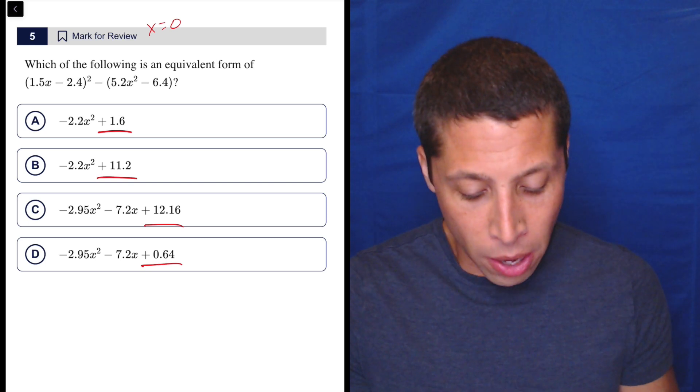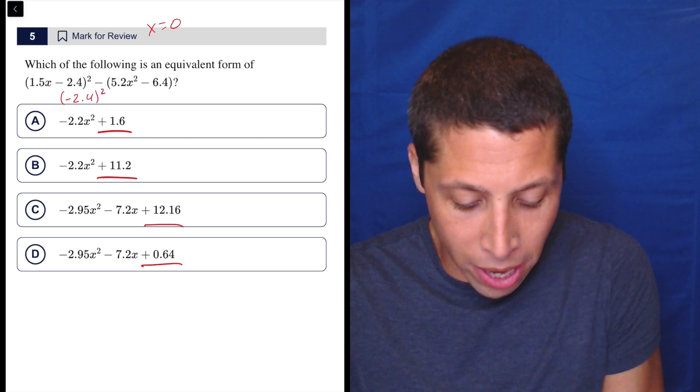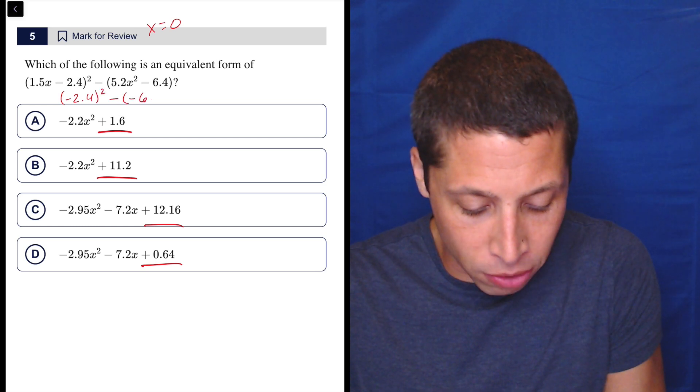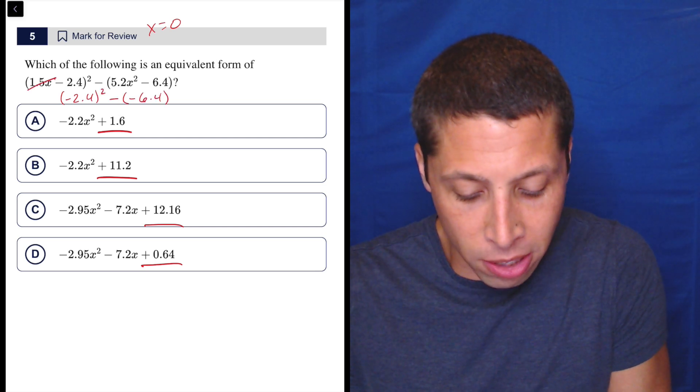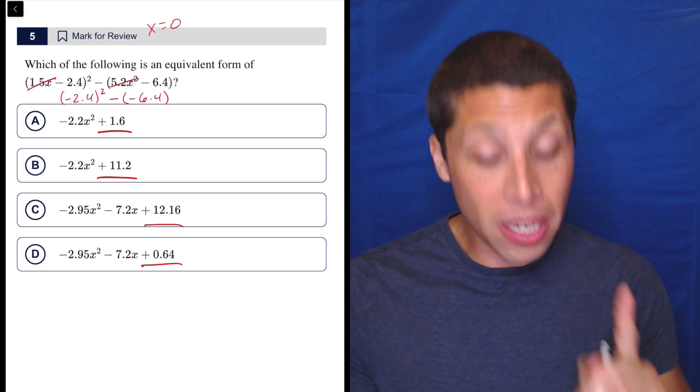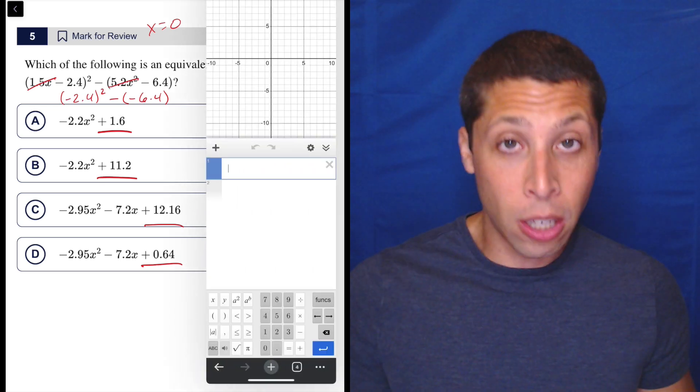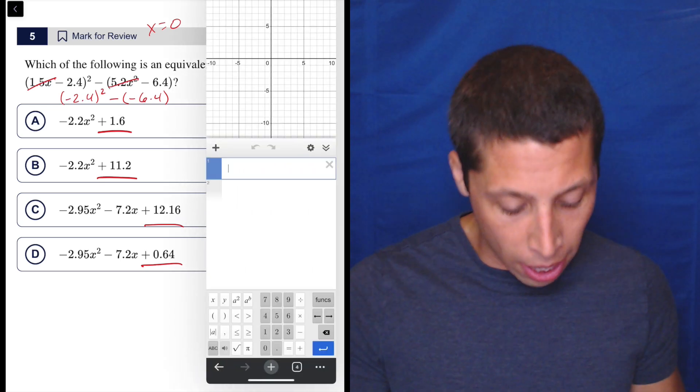So like we've been doing, let's make x equal to zero. So this equation really just becomes negative 2.4 squared minus negative 6.4, right? Because if we put a zero in, this goes away and this goes away. So we can't lose those negatives, and we got to be careful with the parentheses, but otherwise this should work itself out. So I would normally go to this calculator, but to show you, I'm going to use Desmos here.